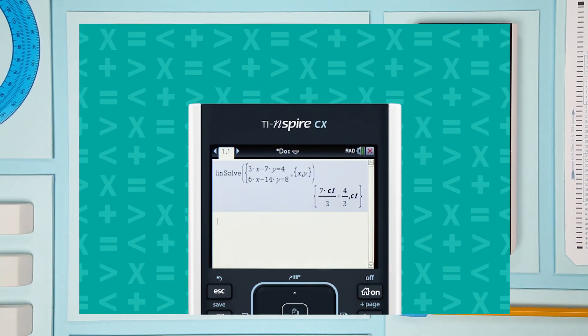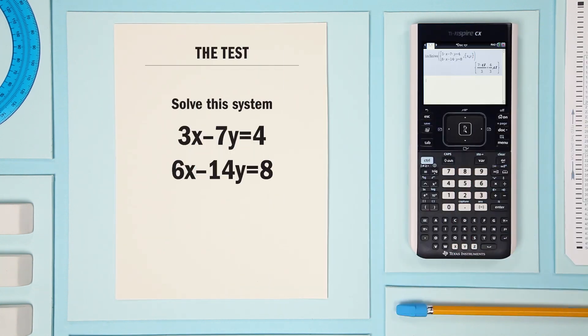Notice the bottom equation is the top equation multiplied by 2. They're the same line. So your handheld shows x in terms of y. So the answer is infinite solutions.